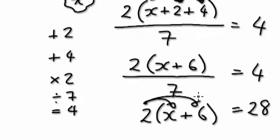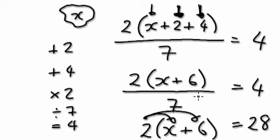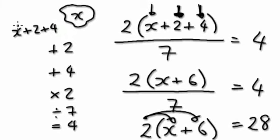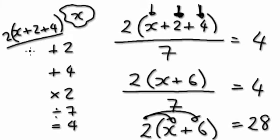So let's go back and recap. When thinking of a number: add 2, add 4, multiply by 2, then divide by 7 — that gives us x equals 8.